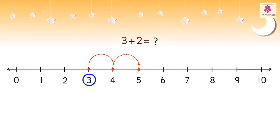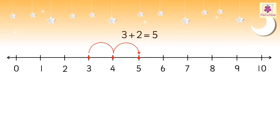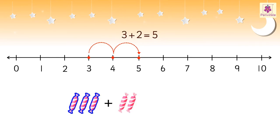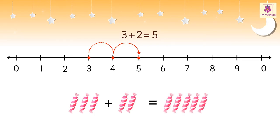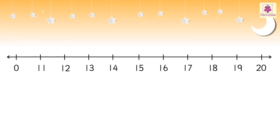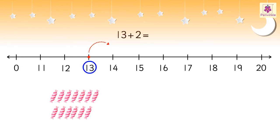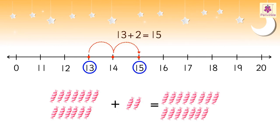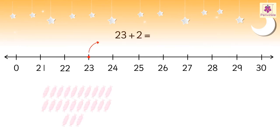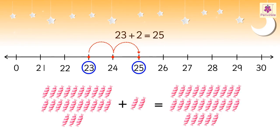Another method is to just add two more to the given number three and get the same answer, that is five. In the same way, two more than thirteen is fifteen, and two more than twenty-three is twenty-five.